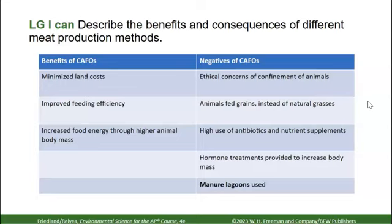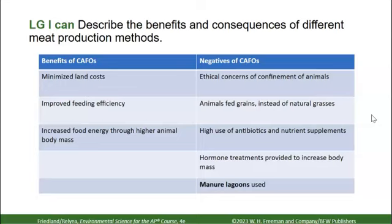On the AP test, you will not be asked about ethical cruelty to animals; we mostly focus on environmental impact. Another negative: animals are fed grains instead of natural grasses. Corn-fed beef, which is most common in CAFOs, creates a more fatty, less nutritious product than if a cow eats the grasses they evolved to eat. You also have to use antibiotics because diseases can spread when animals are so close together, and hormone treatments may be used to increase body mass.